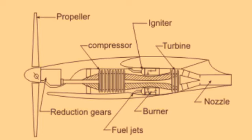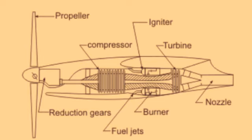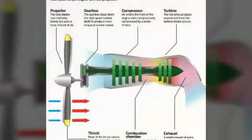The propeller in a turboprop is large in diameter compared to the turbofan's fan, and the turbojet has no fan or propeller at all. This large propeller can extract a large mass of air and therefore produces higher thrust. Only about 10% of thrust is produced by the jet exhaust, so jet thrust is not critical in the turboprop engine.